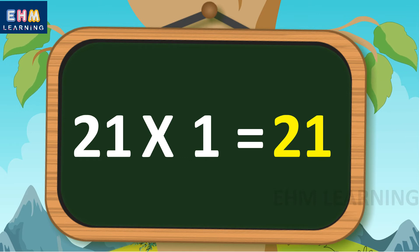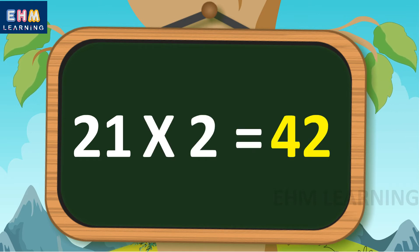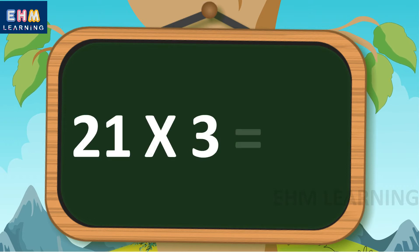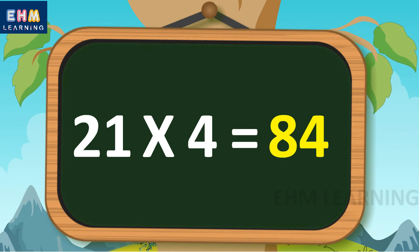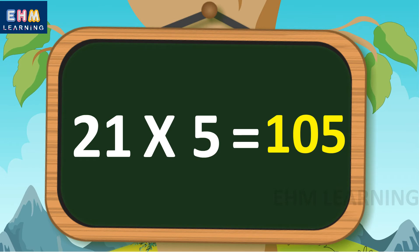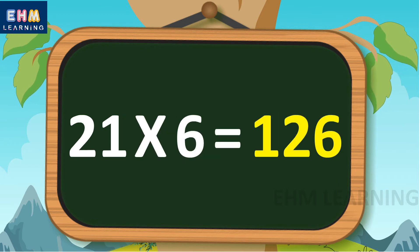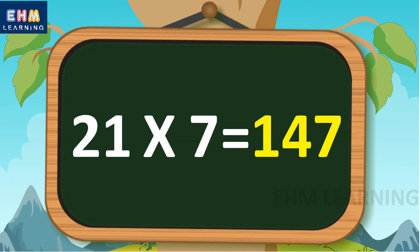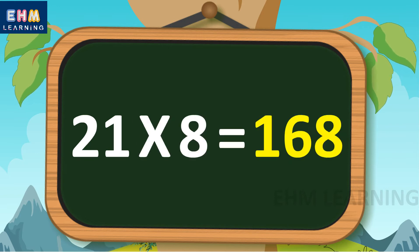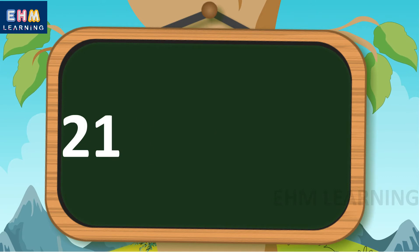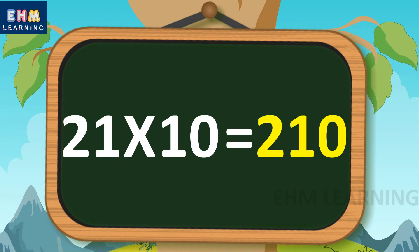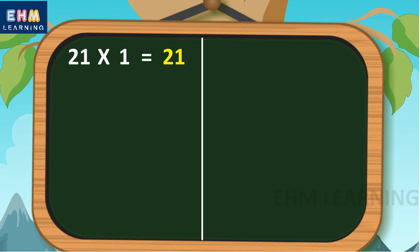21 ones are 21. 21 twos are 42. 21 threes are 63. 21 fours are 84. 21 fives are 105. 21 sixes are 126. 21 sevens are 147. 21 eights are 168. 21 nines are 189. 21 tens are 210.